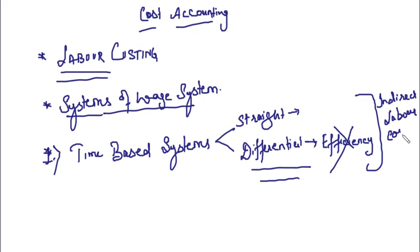Indirect labor cost is any cost which cannot be identified in one unit of a finished product. That is what we discussed regarding the time-based system. In this lecture, we are going to start with the second method of wage payment — that is the output-based system.